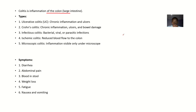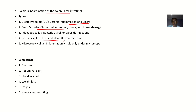Types of colitis: ulcerative colitis involves chronic inflammation lasting a very long time with formation of ulcers. Crohn's colitis also involves chronic inflammation, ulcers, and bowel damage. Infectious colitis results from bacteria, viruses, or parasites. Ischemic colitis occurs when blood flow to a part of the intestine is reduced. Microscopic colitis involves inflammation only visible under a microscope.